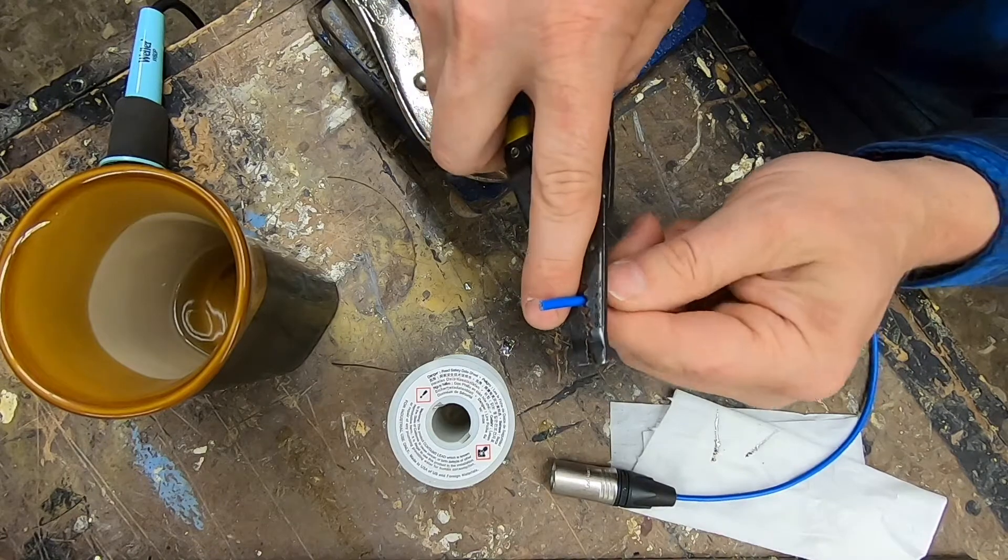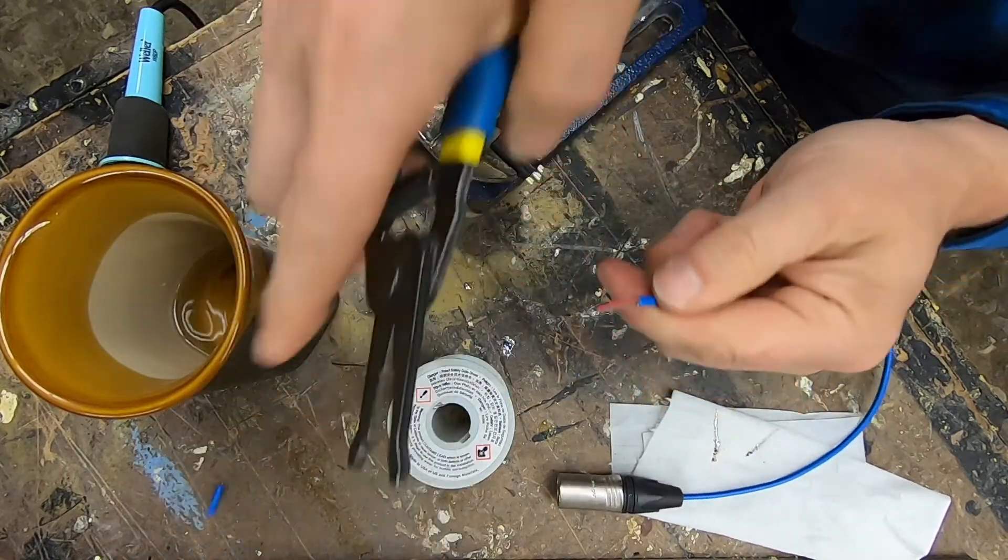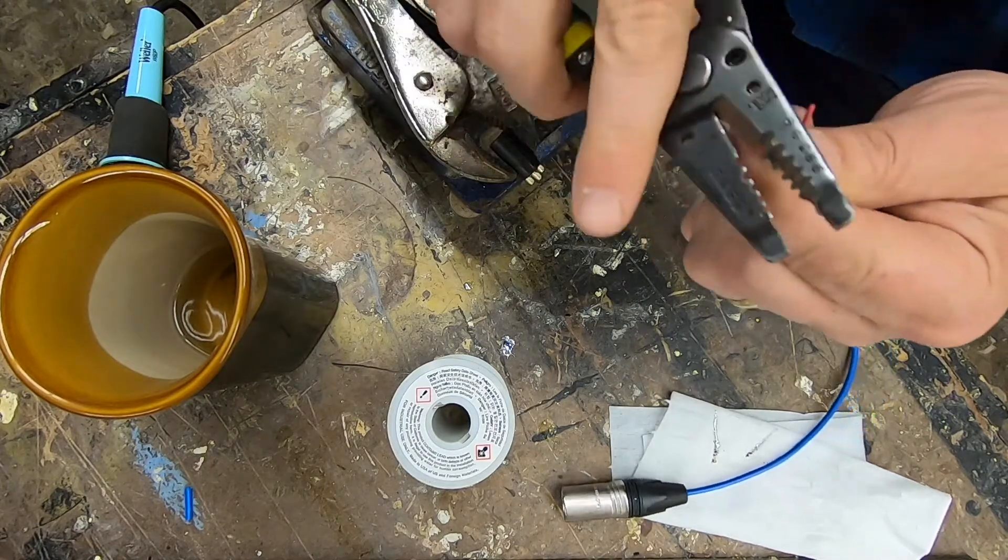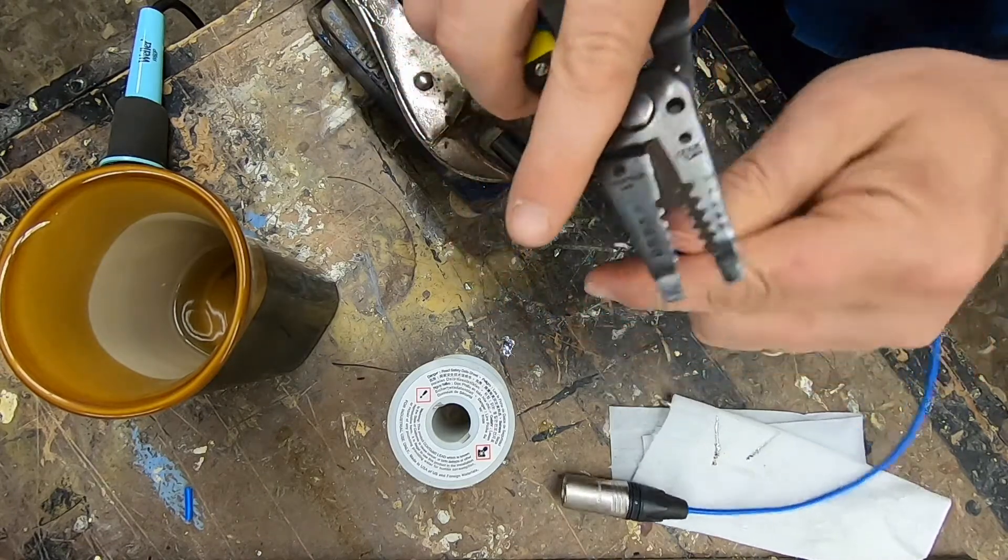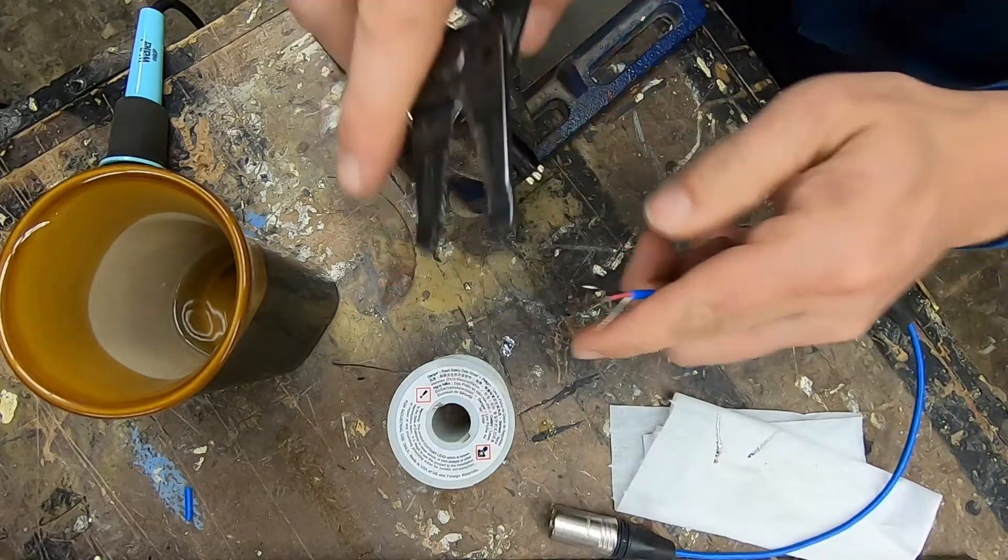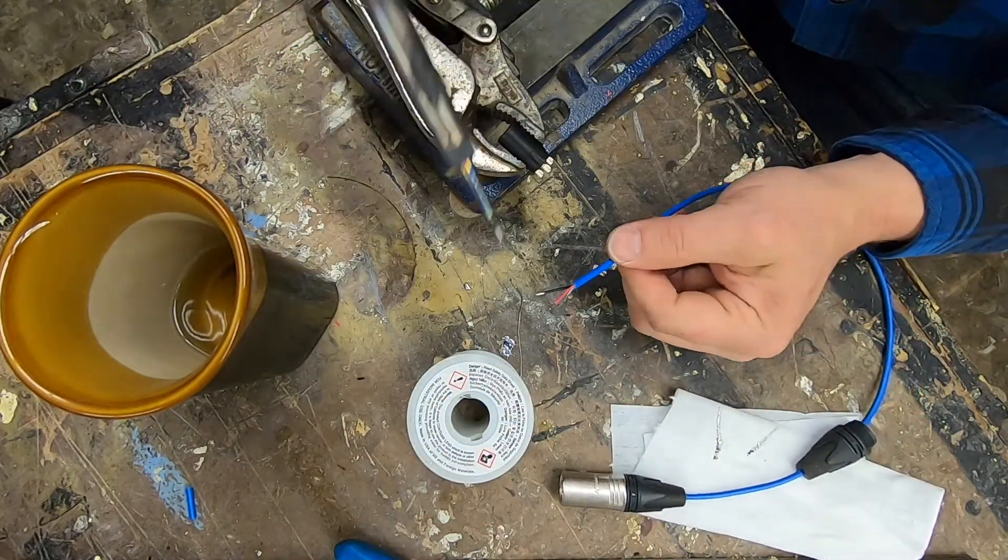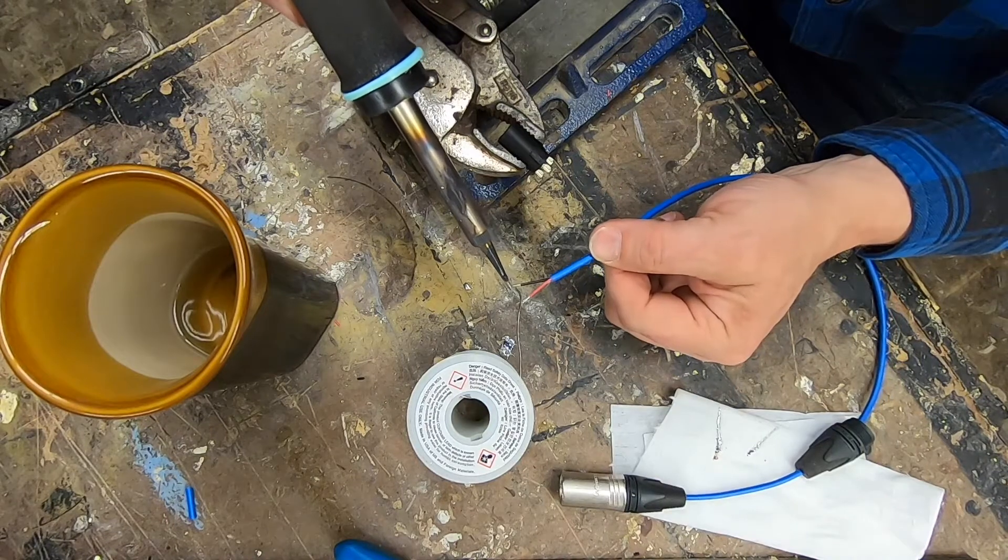On the female side, we'll prep the cable same way. About a half inch of the outer jacket stripped off. About three sixteenths of the interior jacket. Wires get tinned.